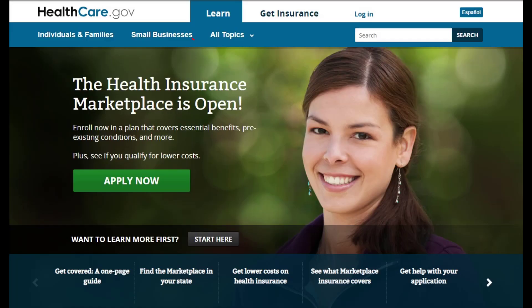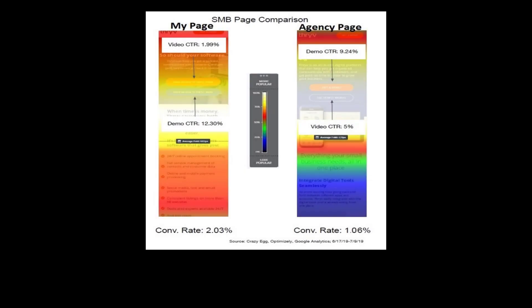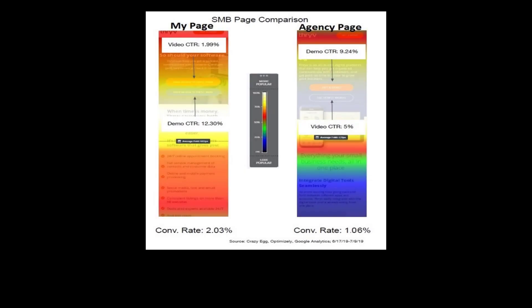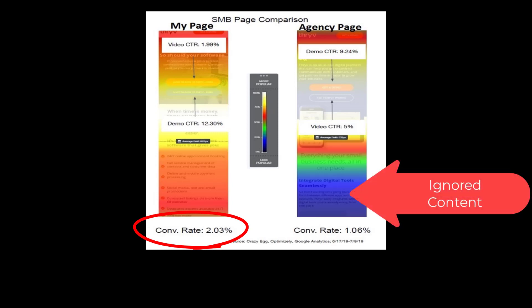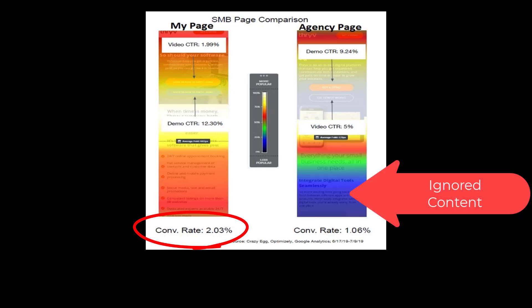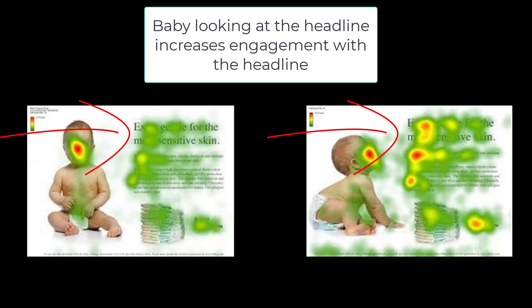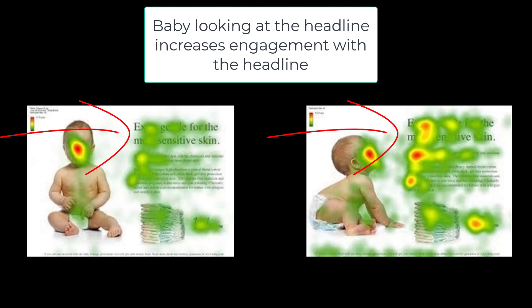Even the images you use will either help you grow your online customer base or repel them. We can easily see this with heat maps and how people look at your marketing material. Images can lead people to read more of your content or ignore it and bounce from your page. Common wisdom these days is to have a smiling woman look at your potential customer — basically looking back at them from the page. In testing, this actually pulls eyes away from the marketing message and lowers the conversion rate, eating into your three seconds.